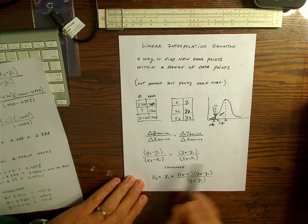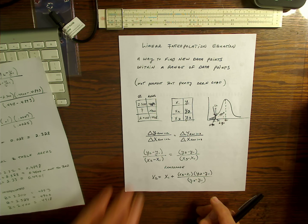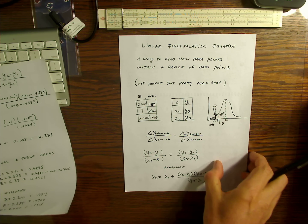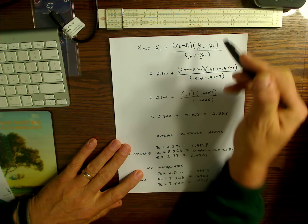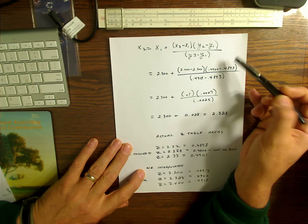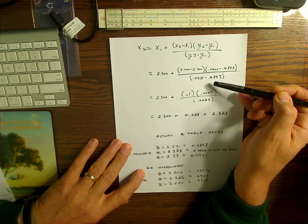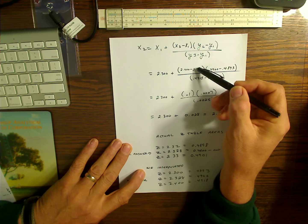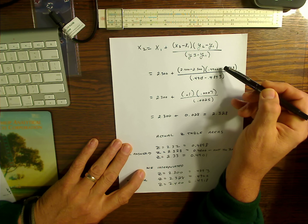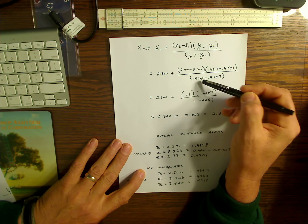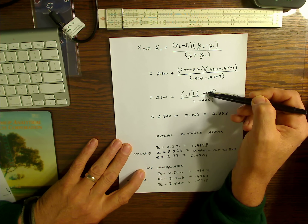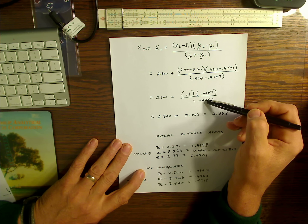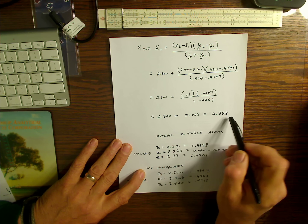You can actually write this equation down inside the cover of your chemistry book and you'll be glad you did, because at some point you'll use it. Let's plug some numbers in and show you how it works. Here's the equation again and here are the numbers off that chart. This was our X1 value for Z: 2.300, and here was X3 minus X1. Here's our Y2 minus Y1 and here's our Y3 minus Y1. Plugging these numbers in, this is what we get.